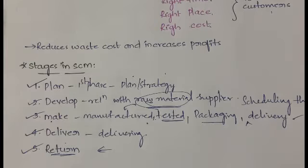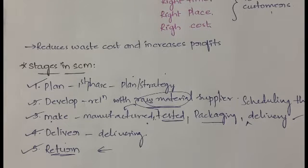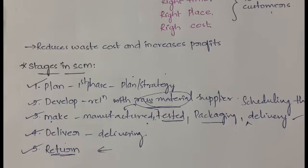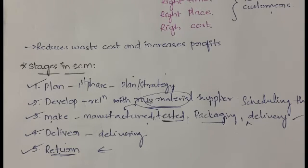So those are the five stages in supply chain management: Plan, Develop, Make, Deliver, and Return. In Plan we develop a strategy; in Develop we establish relations with raw material suppliers; in Make we manufacture, test, pack, and schedule delivery; in Deliver we deliver the product to the customer; and in Return, if the customer is unsatisfied or the product is damaged, the customer returns the product. Supply chain management ensures the right product at the right time, right place, and right cost.